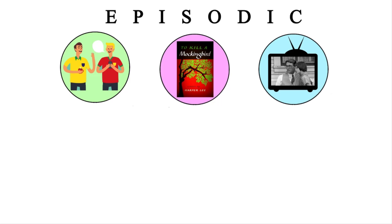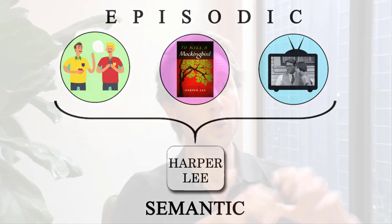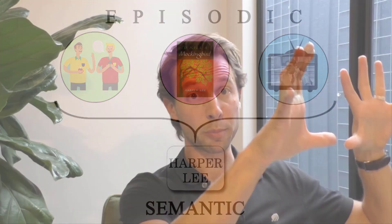You built all these episodic memories, and from those you were able to glean out the semantic fact. So episodic memories — which are highly influenced by mood and emotion — are the building blocks for these semantic memories, which seem to be devoid of emotion and largely acontextual.